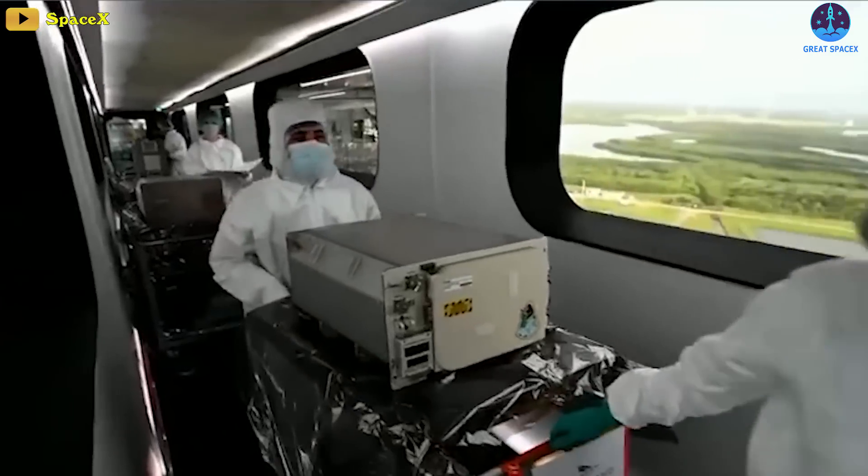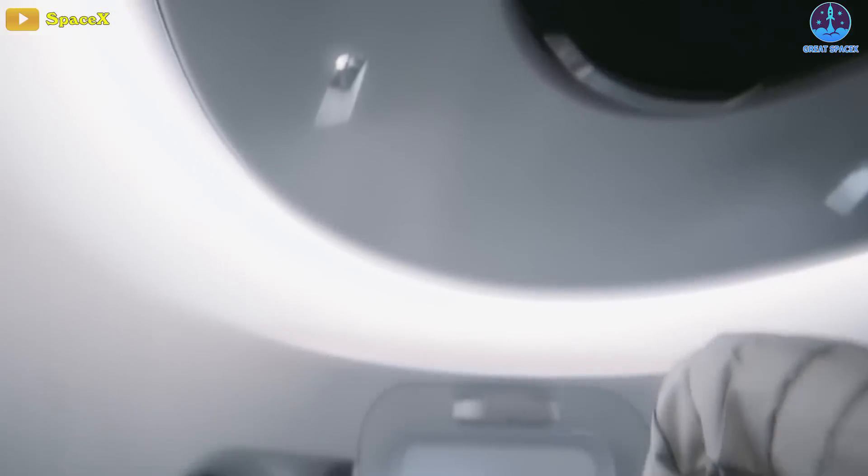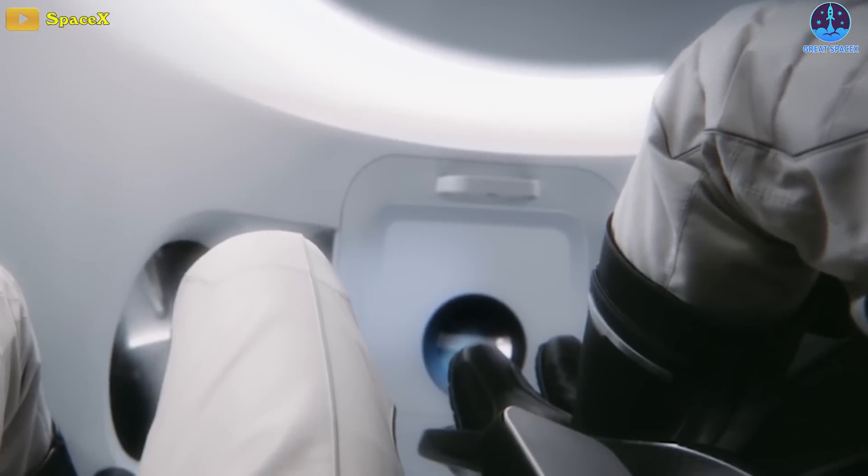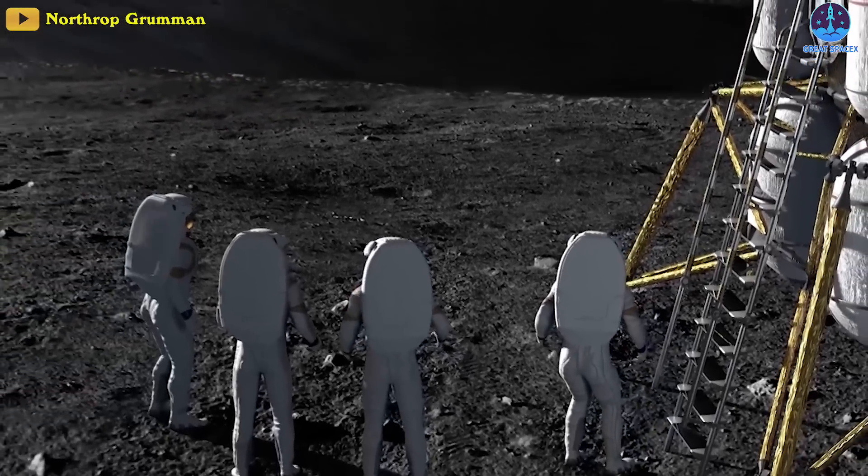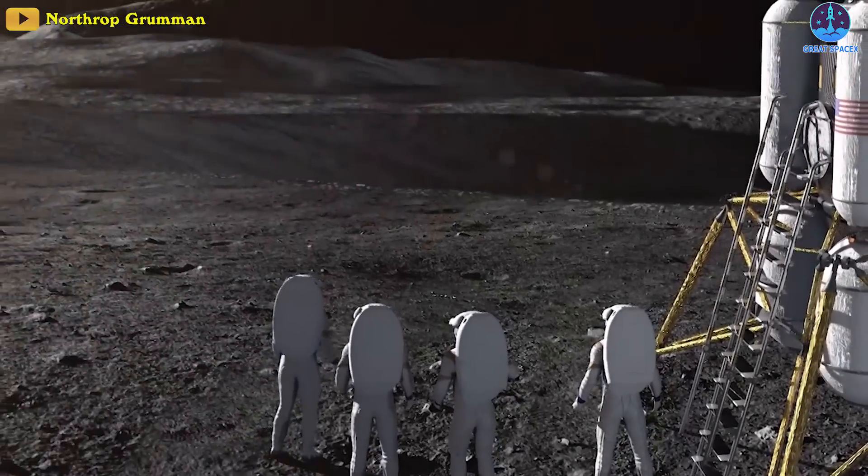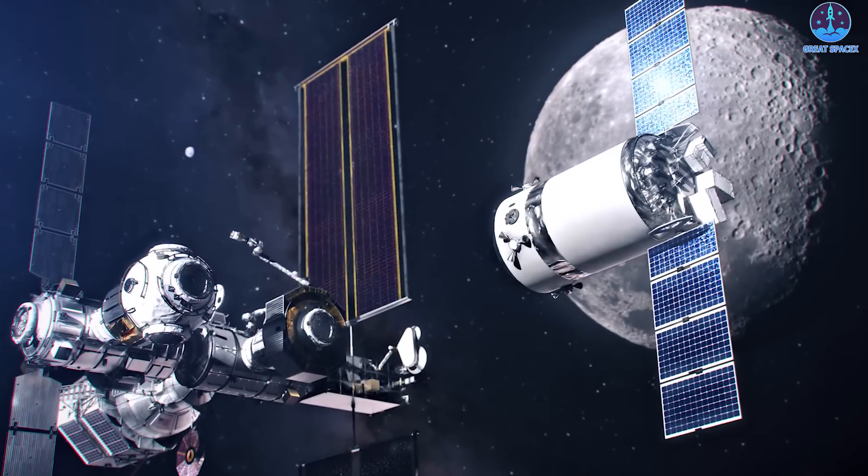According to NASA, the equipment delivered by SpaceX's Dragon XL missions could include sample collection materials, spacesuits, and other items astronauts may need on the Gateway and on the moon's surface.